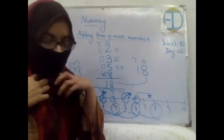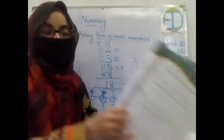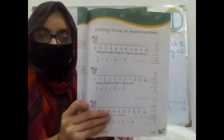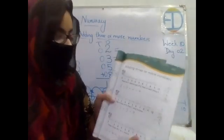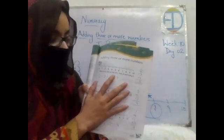Now open your book to page number 47. Here we have related questions where we add three or more numbers. There is a small rabbit that starts at zero, takes a hop of two, then three, and lastly four. Write the three numbers in vertical order one above the other and add them — the answer is nine.